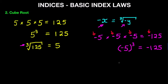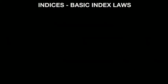How do we write the cube root down? We write the cube root of minus 125 equals minus 5. That is how we write down cube roots — and don't forget: the cube root of a negative number will be negative.